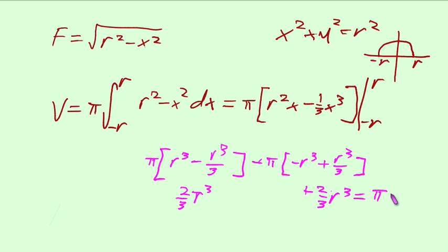So, adding that together with your pi gives us the formula, sorry, four-thirds pi r to the third.